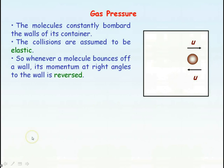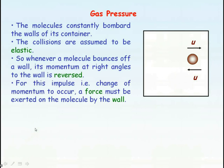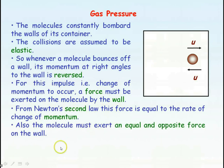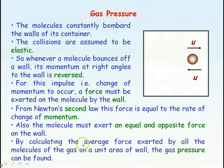Because we have a change of momentum, we have an impulse. For an impulse to occur, there must be a force that acted on the molecule, and this force must have acted from the wall. From Newton's second law, this force is equal to the rate of change of momentum of the molecule. From Newton's third law, if the wall exerted a force on the molecule to change its momentum, then the molecule must exert an equal and opposite force on the wall. By calculating the average force all the gas molecules exert on a unit area of wall, we can determine the gas pressure. Remember, the definition of pressure is force per unit area.